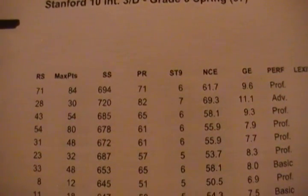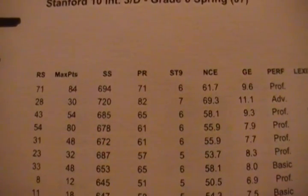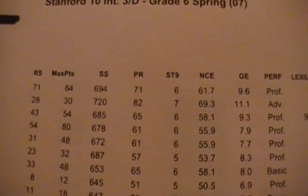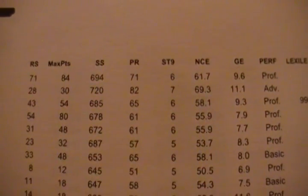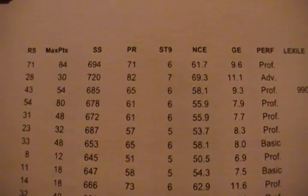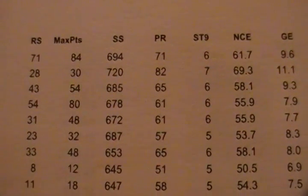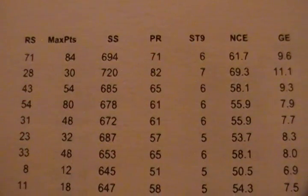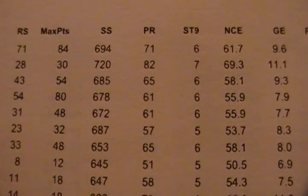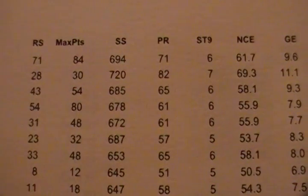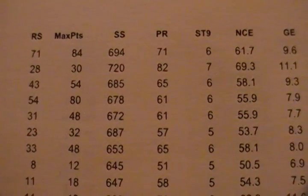Let's look at these columns, which are often misunderstood. RS is what we call the raw score — that is the number correct your student answered. Not the number they answered, but the number they got correct. The next column is max points, which stands for how many questions there were. For instance, this student got 71 out of 84 correct. You can see that for all the subjects.